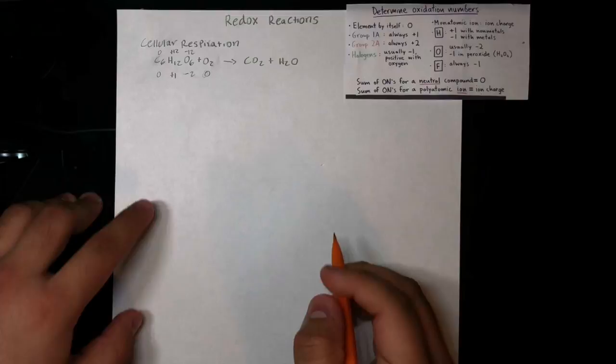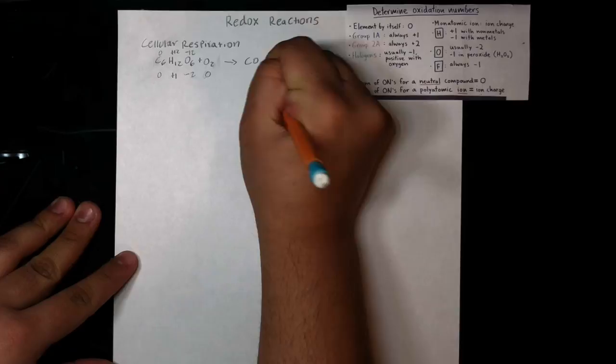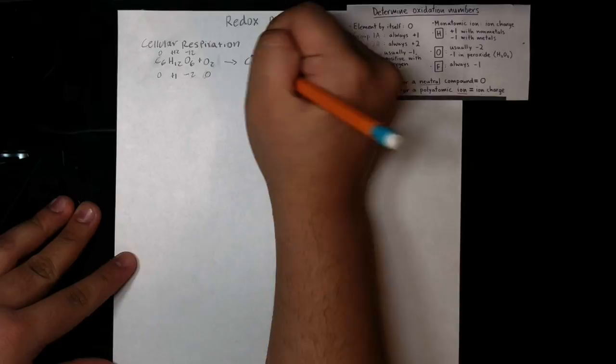Now we can also find the oxidation numbers in carbon dioxide. Oxygen would be negative two, and that gives us negative four. To make this balance, we have to add plus four, so the oxidation number of carbon in CO₂ would be plus four.